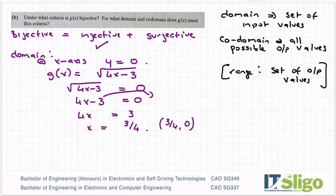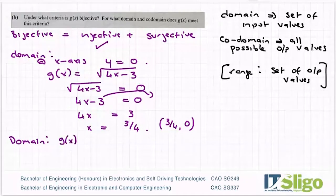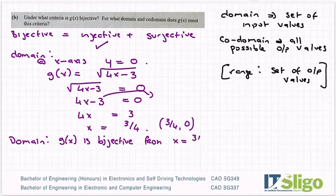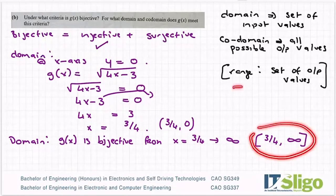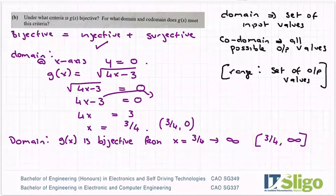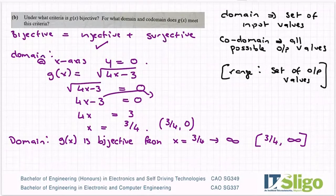For the domain, for what domain is g of x bijective? g of x is bijective from x equals three quarters to infinity. Or if I write it down as we would write down a range, you write it down with square brackets, three quarters to infinity. Same way we would write the range if we were doing trig and talking about one of the waves. So three quarters to infinity is where that graph is bijective.